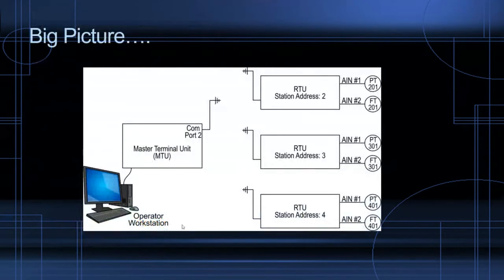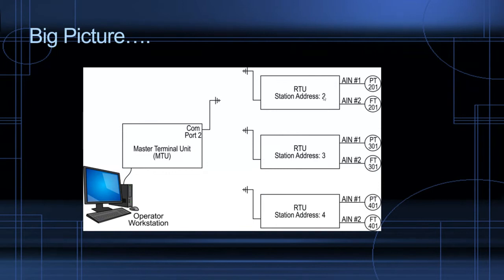The big picture of a SCADA system: we have a master terminal unit that receives all the data from remote field devices, or remote terminal units (RTUs). Each RTU has a unique station address so the master can request information from each one. These RTUs are basically standalone sites — well heads, pump stations — that have their own I/O, controllers, and radios that transmit information back to the master terminal unit.